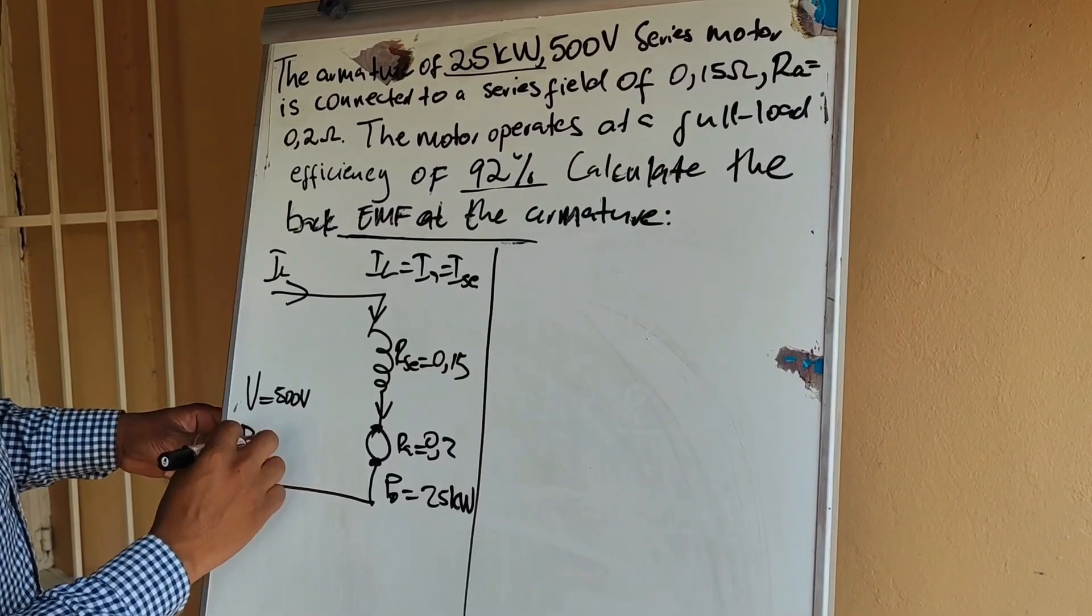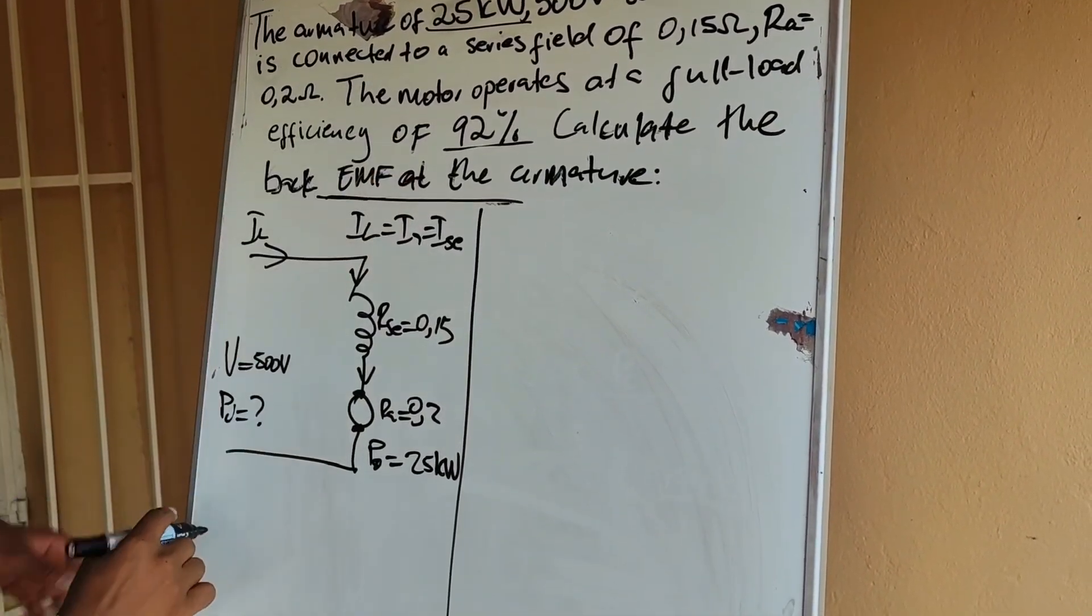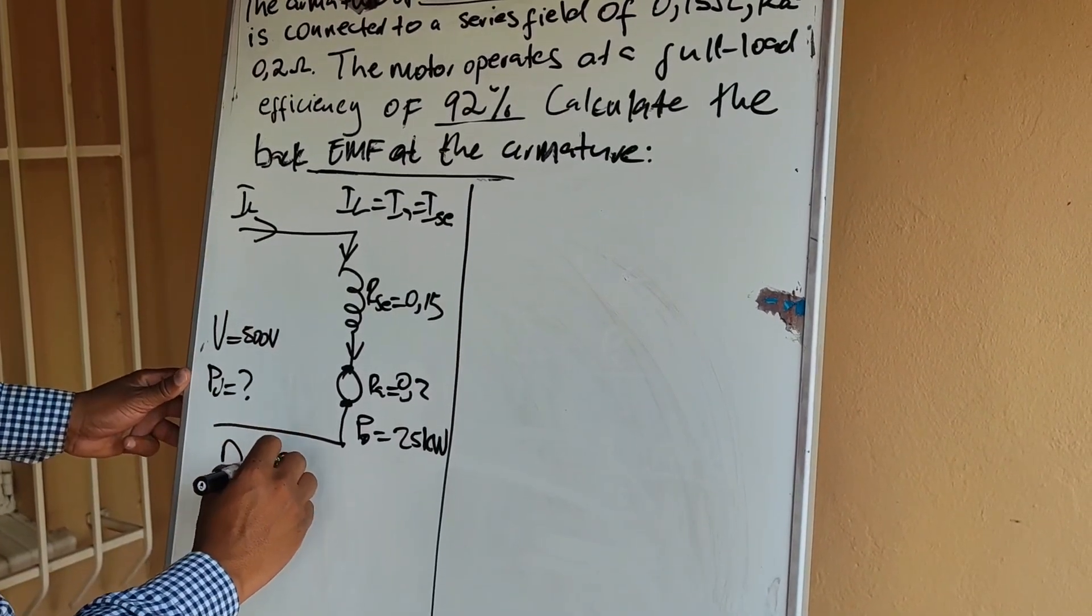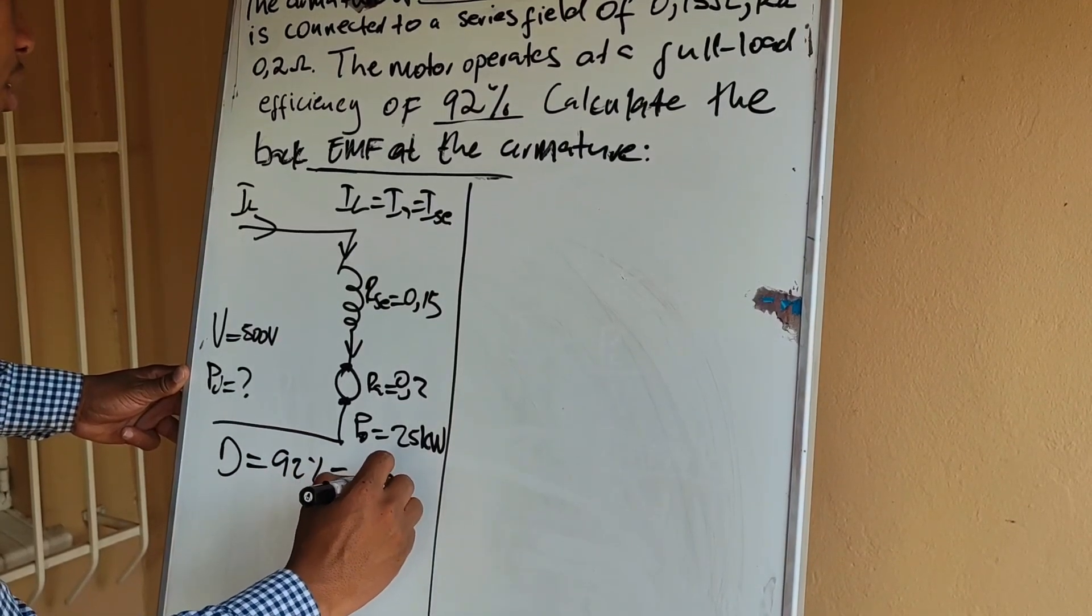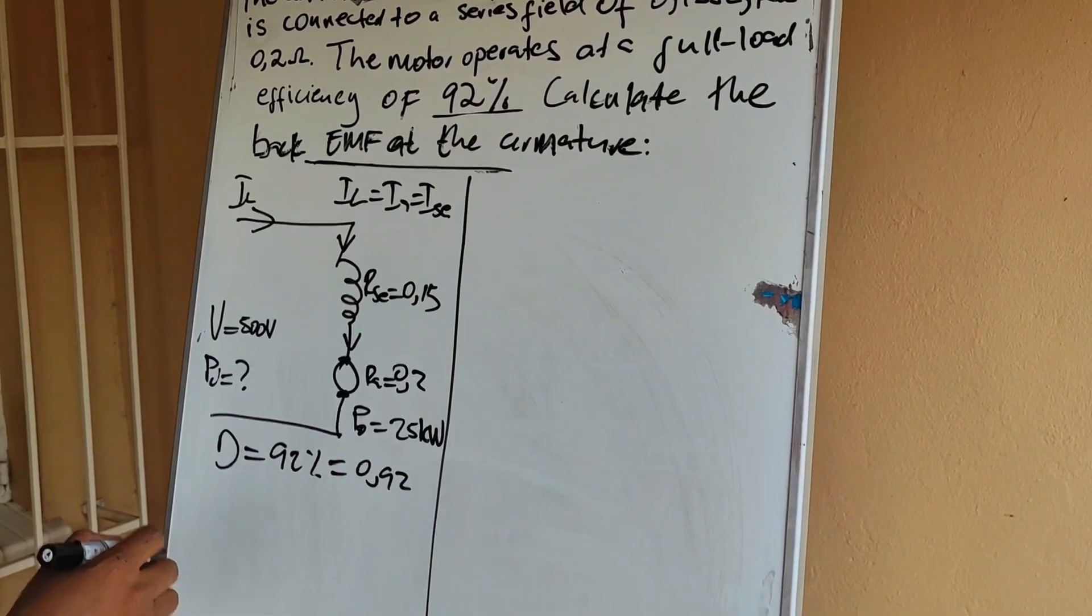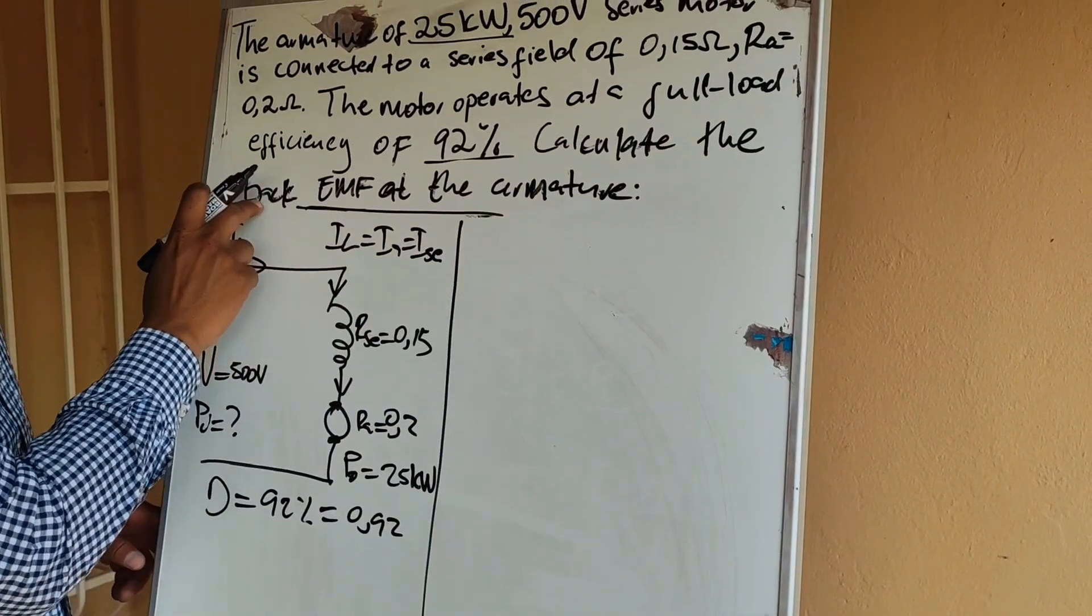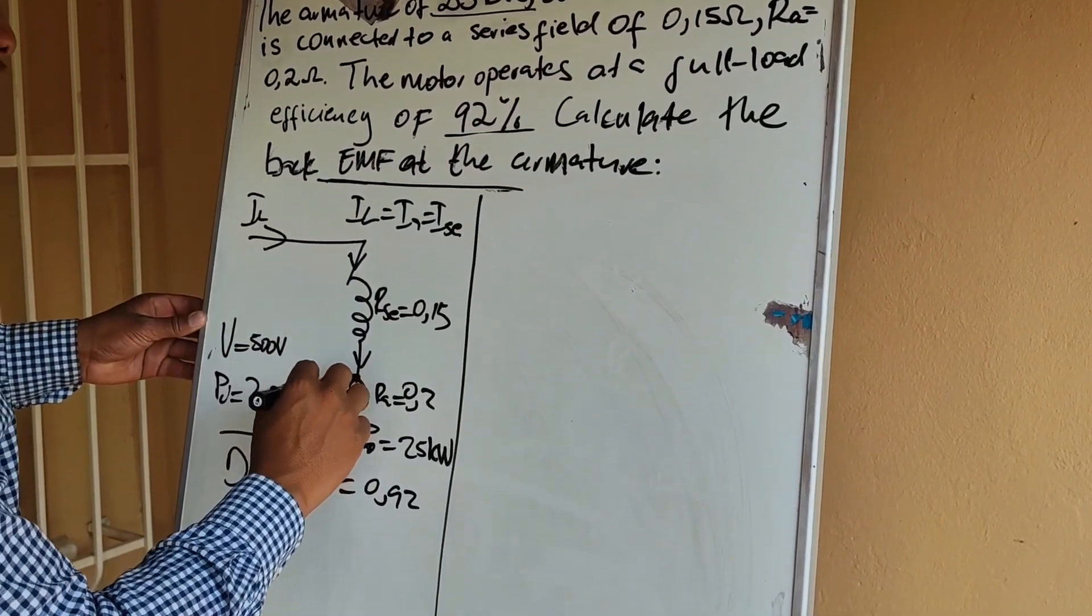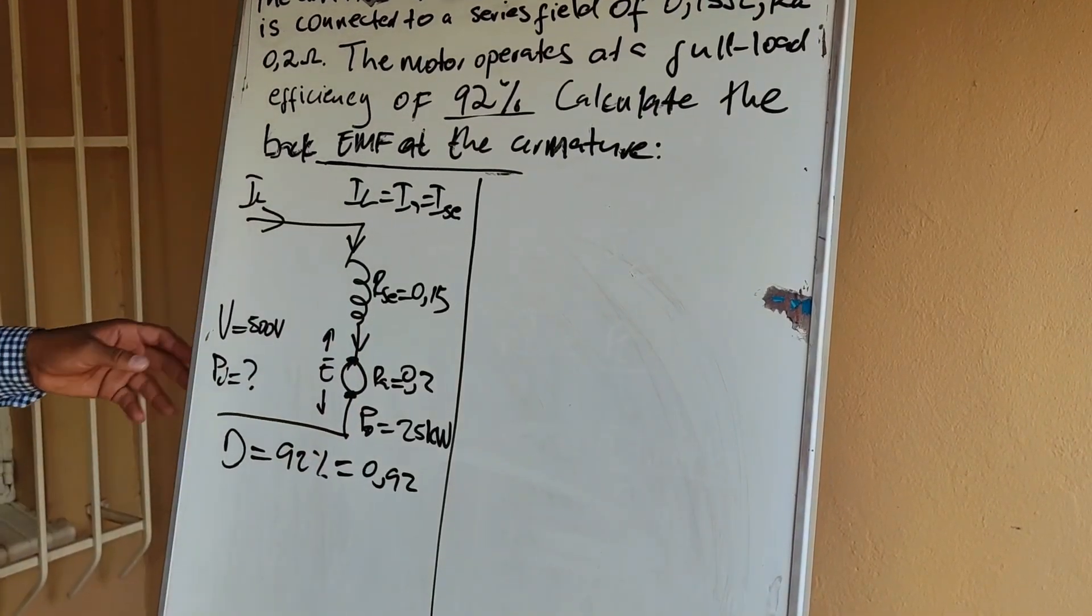P in, the electrical input power we are not given. But we are given an efficiency. Efficiency of the machine is equal to 92% which is equal to 0.92. So now that we have all of these values the question is to calculate the back EMF at the armature. They want us to calculate the value of E that you would read here at the armature.